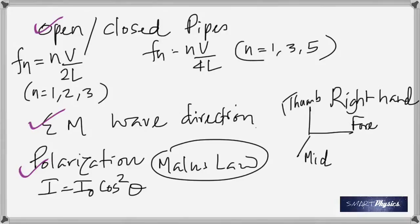Polarization: when unpolarized light passes through the first polarizer, the intensity drops to 50% of its original value. From the first to the second polarizer, use Malus's Law: I = I₀ cos²θ, where θ is the angle between the axes of the two polarizers. If you start with intensity 10 and it becomes 5 after the first polarizer, use 5 as I₀ in the equation for the second.